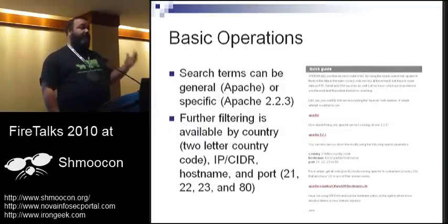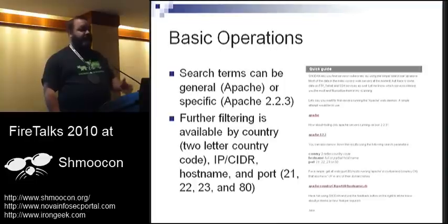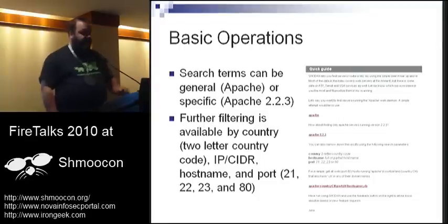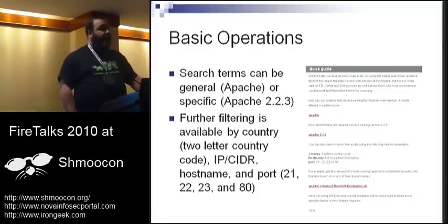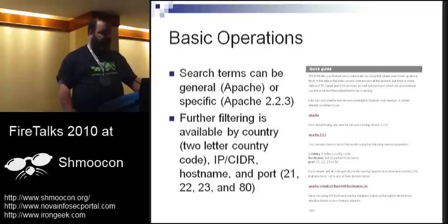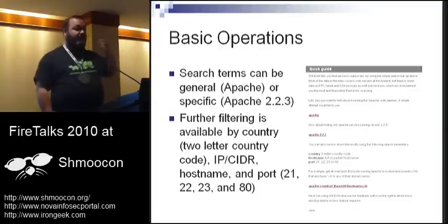You can be very general — searching for Apache will find pretty much any device that has Apache in the banner, which is going to be hundreds of thousands of boxes. Or you can search for a specific version of a device, which gets into searching for older, out-of-date devices. You can also filter by a number of options: a two-letter country code if you're looking for devices in a certain country, by IP or CIDR for a specific range, by hostname, and by port — currently ports 21, 22, 23, and 80, with more planned in the future.